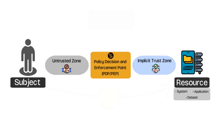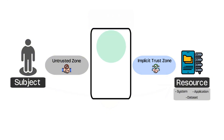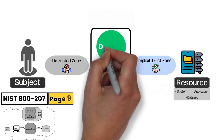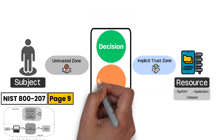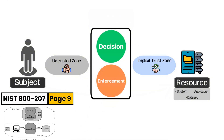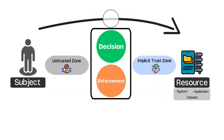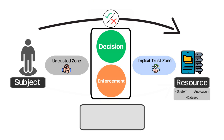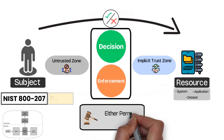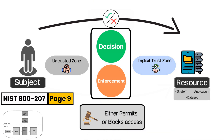At the heart of the entire zero trust model are the two critical components of the policy decision and enforcement point. The decision point is responsible for making decisions on whether a subject is allowed access to the requested resource and under what conditions. The enforcement point, on the other hand, enforces decisions made by the decision point. It sits in line, close to the resource, and either permits or blocks access based on what the decision point instructs.